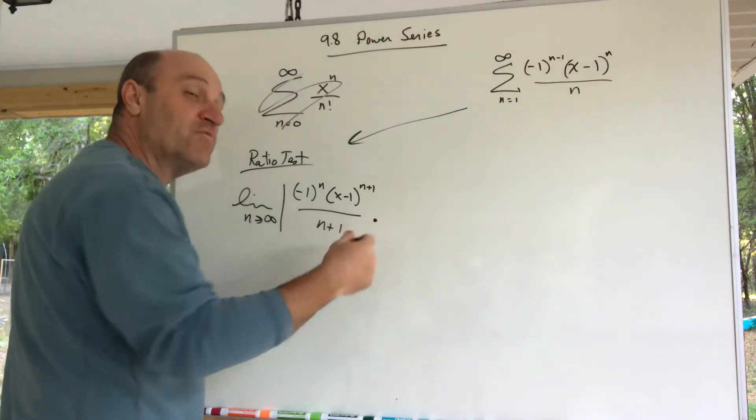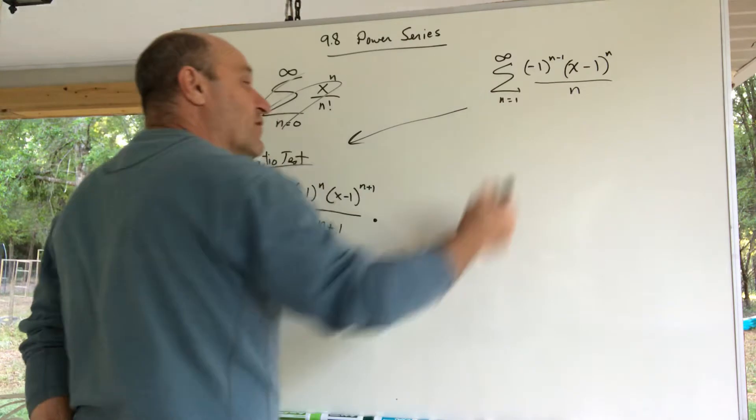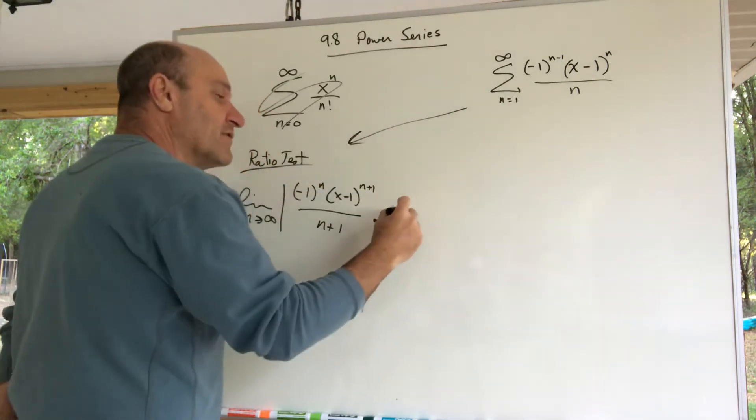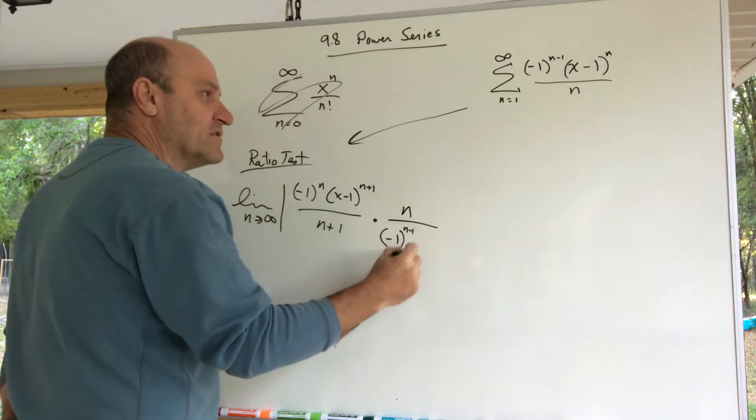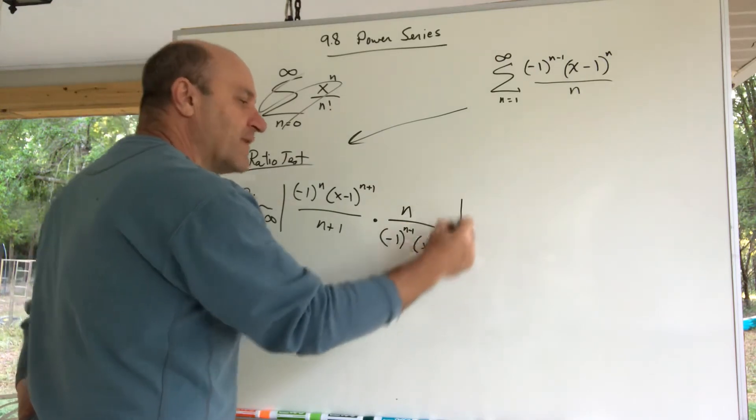And then you divide by the nth term, but what I like to do is flip it up and multiply by the reciprocal of the nth term. And there's the nth term—the reciprocal of the nth term—so I'm multiplying by n, negative 1 to the n minus 1, x minus 1 to the n.